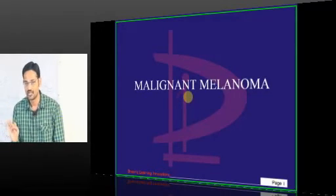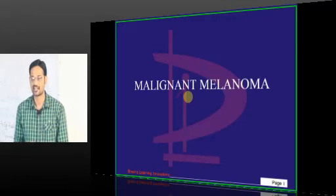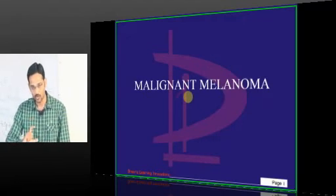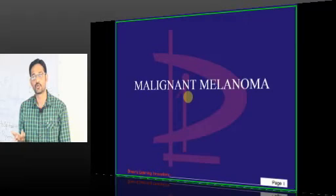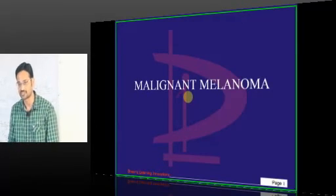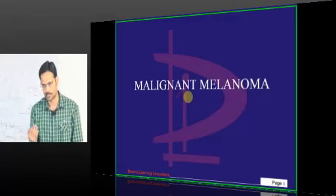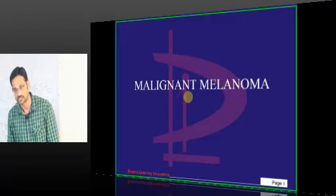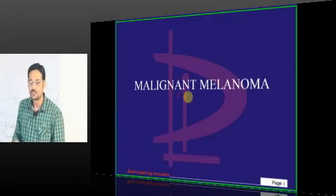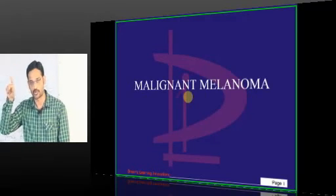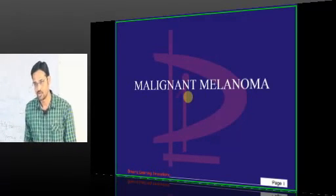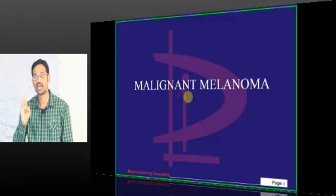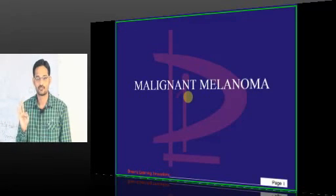Number two is nodular melanoma. The name itself is clear. The specificity of this type is there is no horizontal phase — there is only vertical phase. So will this have good or poor prognosis? Poor prognosis. A nodular melanoma directly carries a poor prognosis. It is more common in the trunk. Remember: extremity melanomas have good prognosis, while trunk melanomas have poor prognosis. So superficial spreading melanoma in the extremity is good prognosis, while nodular melanoma in the trunk is poor prognosis. Number three is lentigo malignant melanoma, which has a very good prognosis and is seen in elderly females.